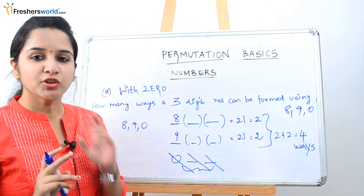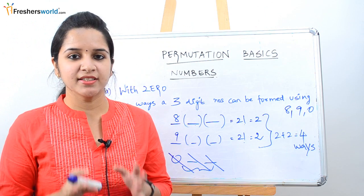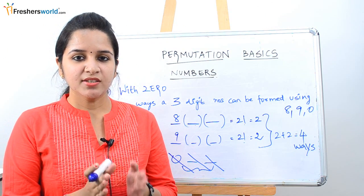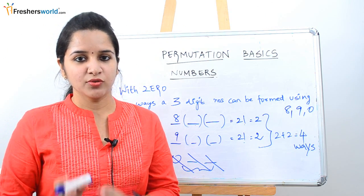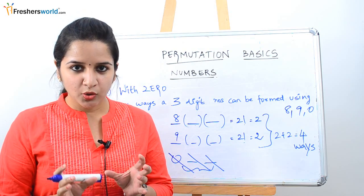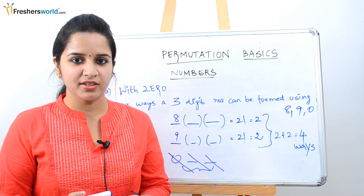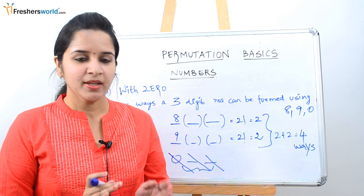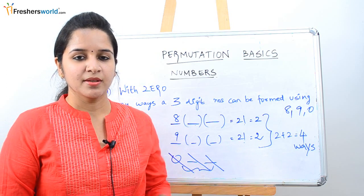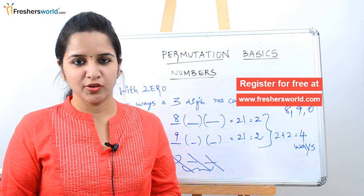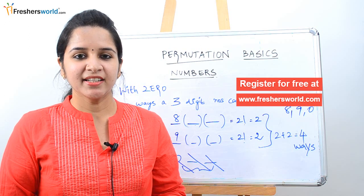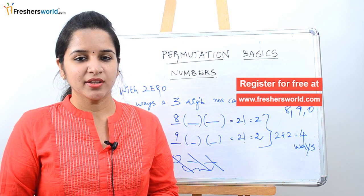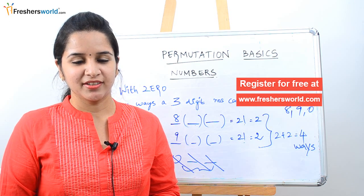So these are the two types of problems you face in permutation with numbers — one with zero and one without zero. If you are thorough with this concept, it is very easy to crack any similar type of problem. If you are looking for a job, kindly register on our freshersworld.com website. Please like this video and subscribe to our channel. Thank you.